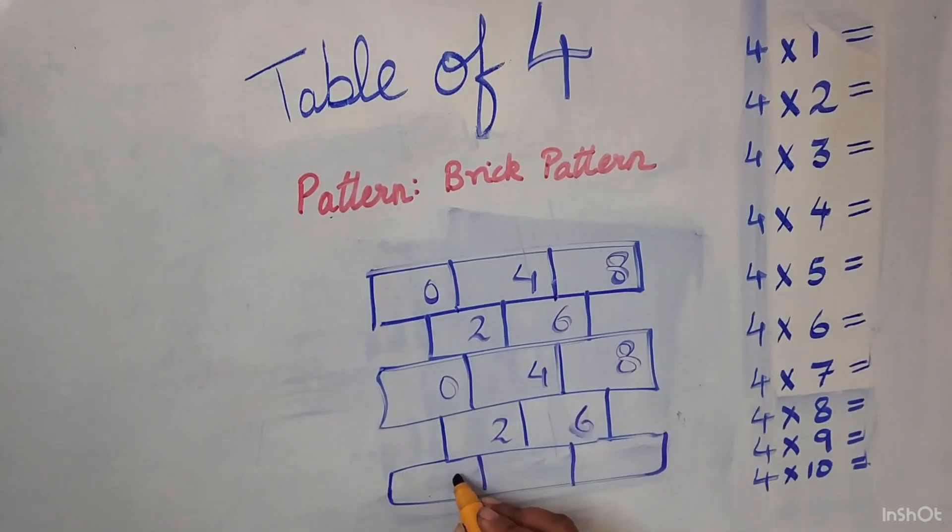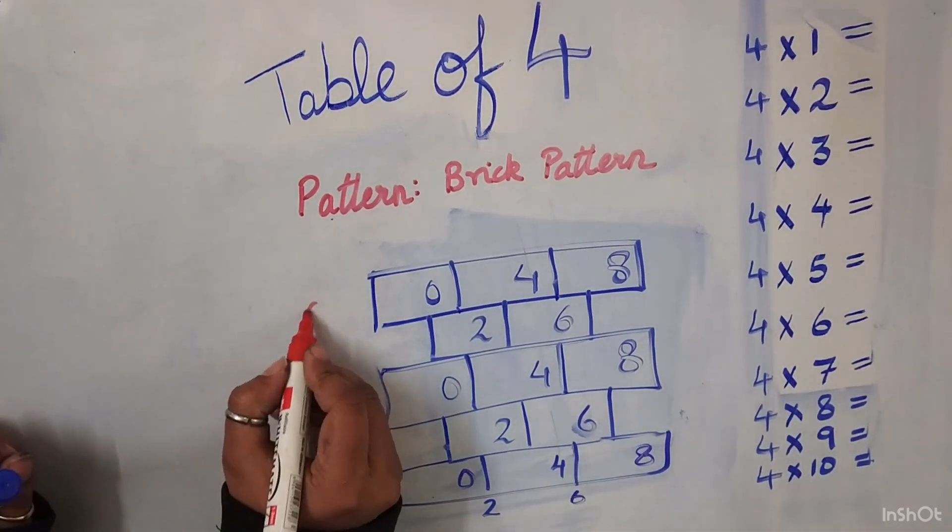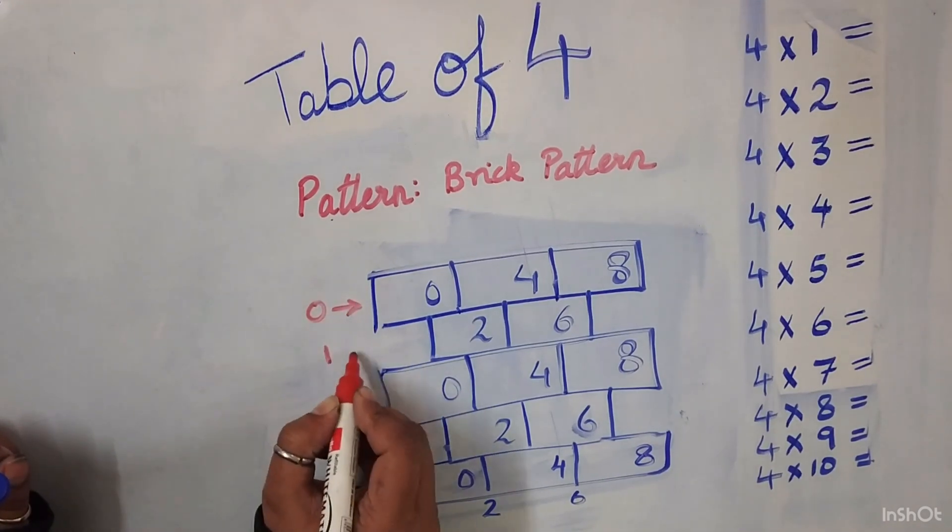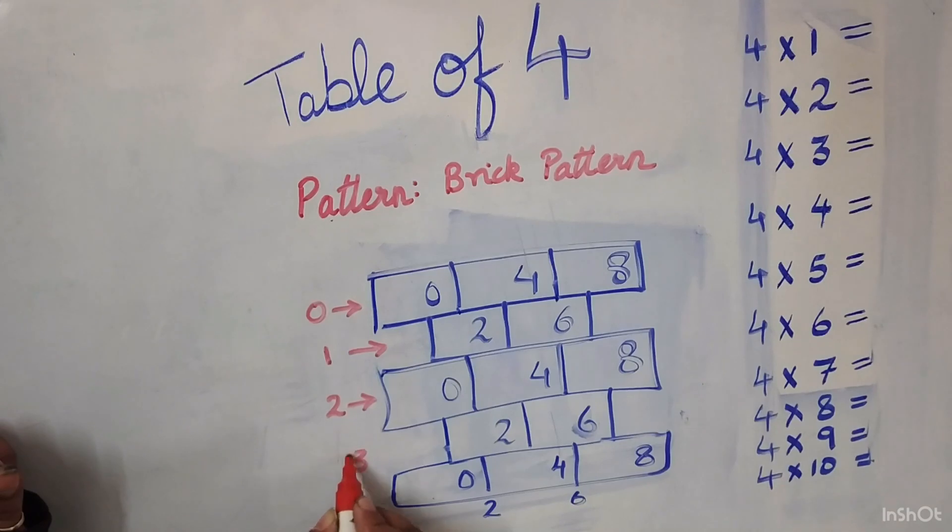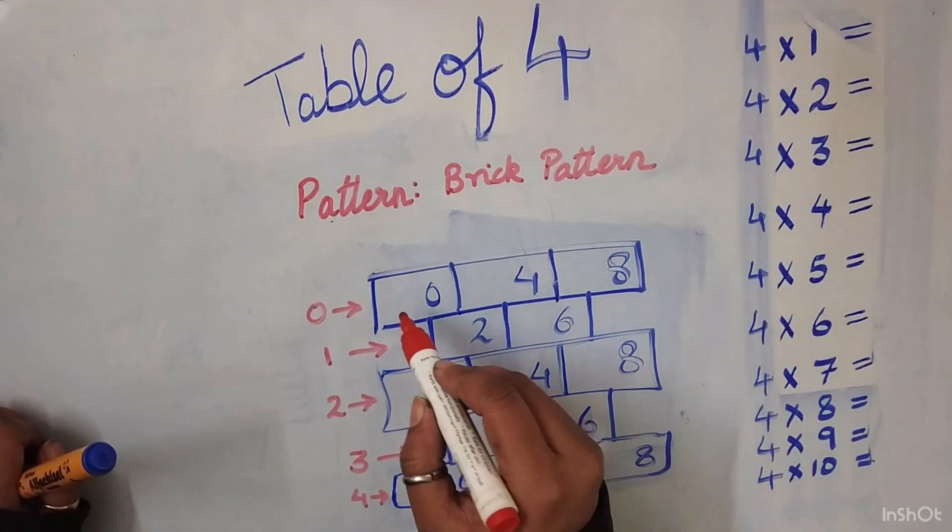Once more 0, 2, 4, 6, 8. Now the magic numbers 0, 1, 2, 3 and 4. Let us fill in these magic numbers.